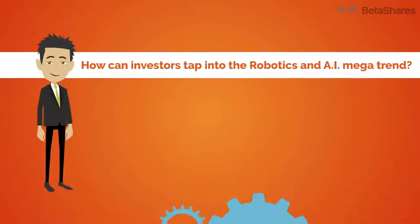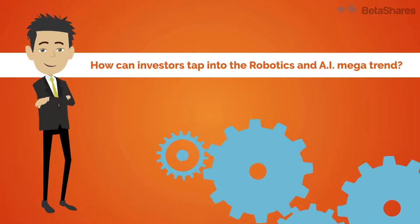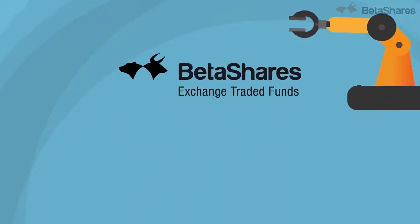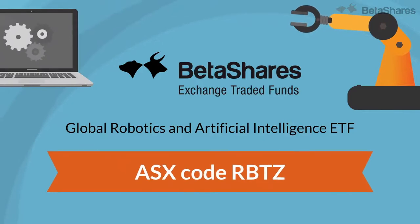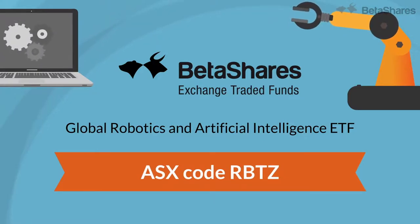How can investors tap into the robotics and AI megatrend? Introducing the BetaShares Global Robotics and Artificial Intelligence ETF, ASX code RBTZ.